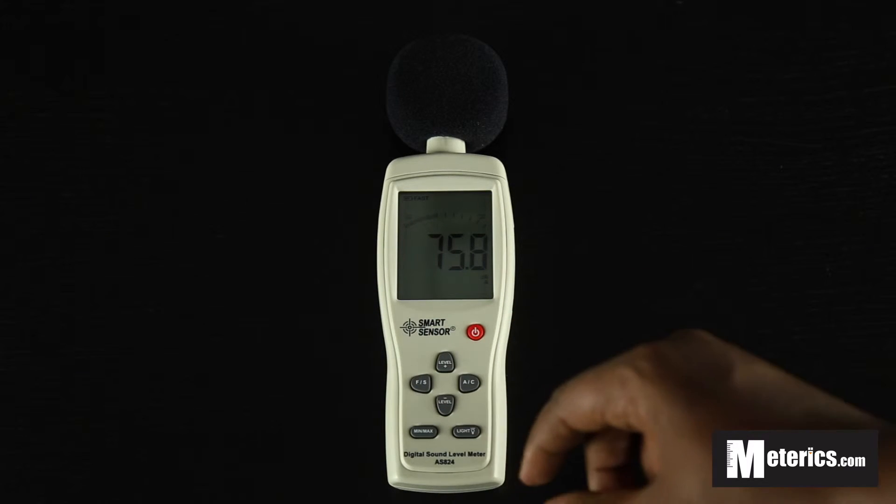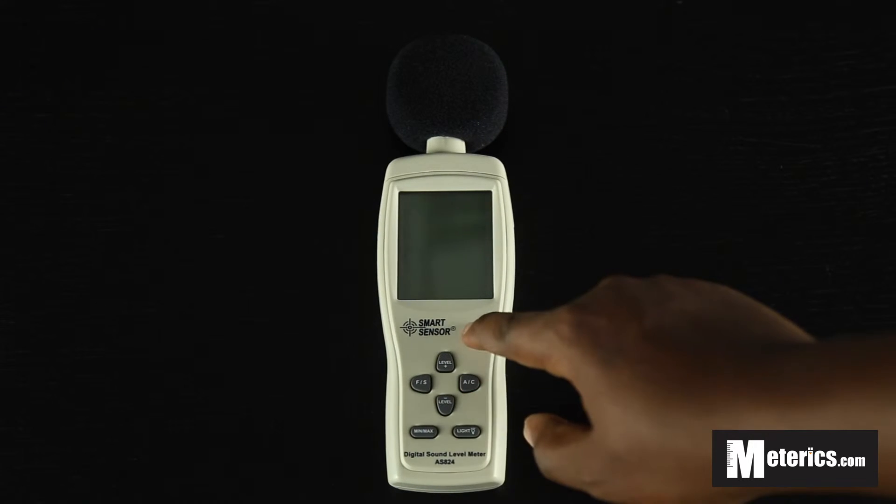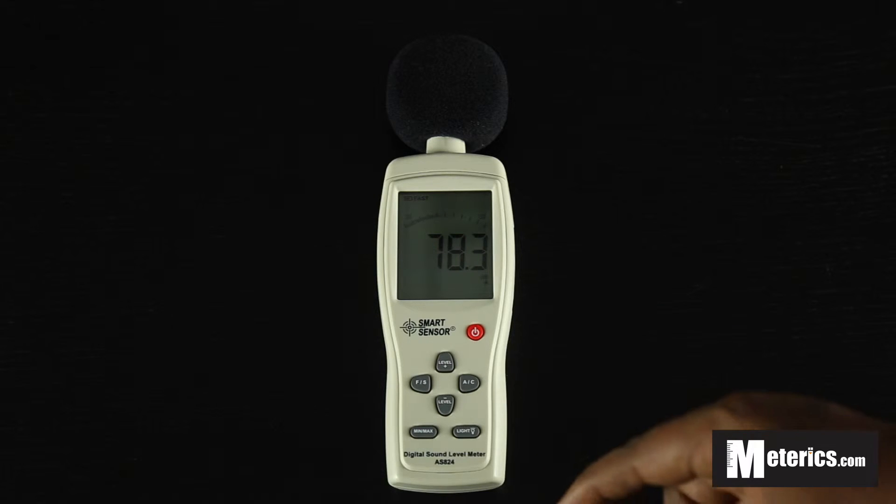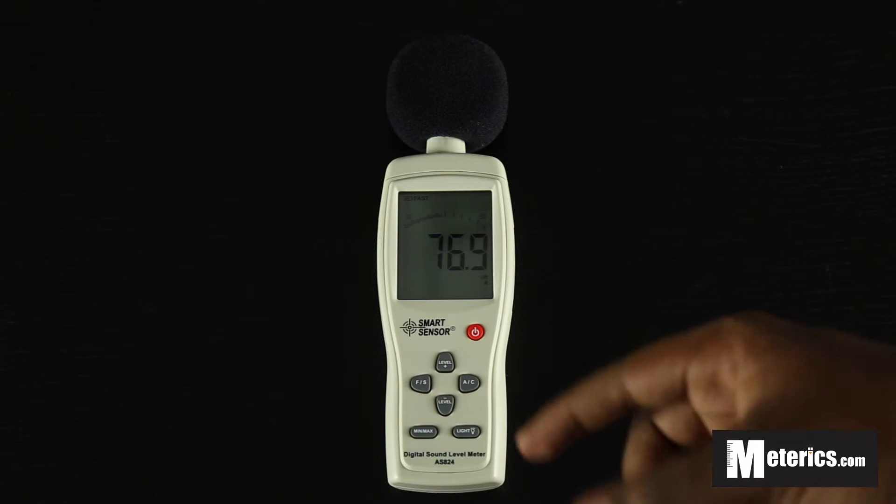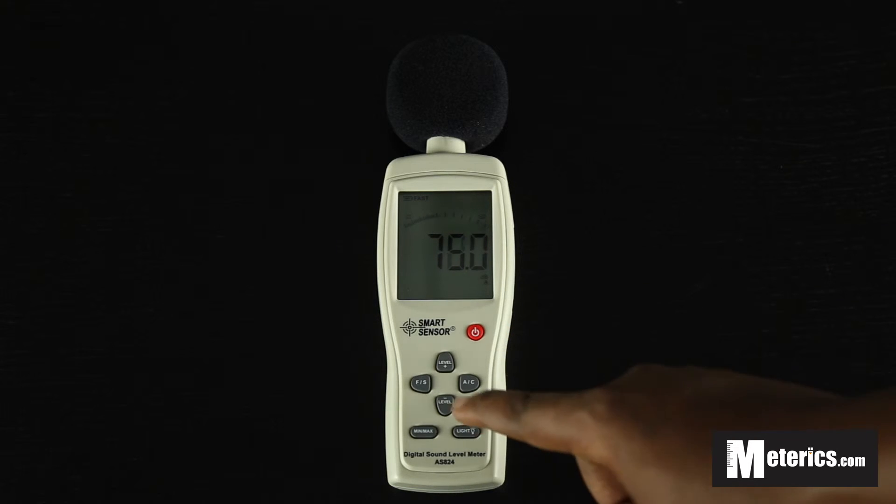If you do not know which range to use and you are not sure, all you need to do is turn the meter off and turn it on. Then it will automatically choose the range for you once it is starting up, based on what sound levels that it is picking up.